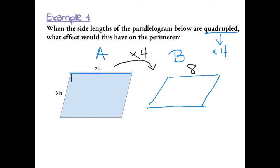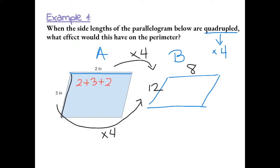And this side, which is 3 inches, would also be quadrupled or times 4, which gives us 12. So the perimeter of figure A is 2 plus 3 plus 2 plus 3, because opposite sides are equal, giving us 5 plus 5, which equals a perimeter of 10.